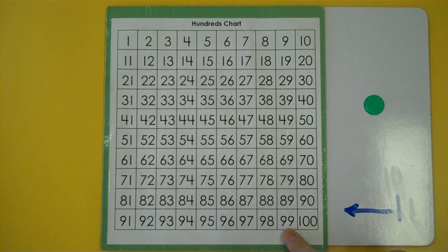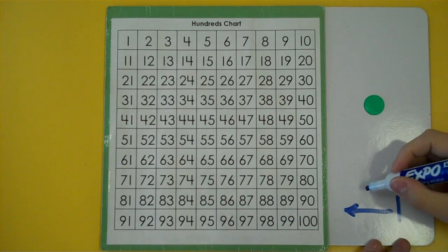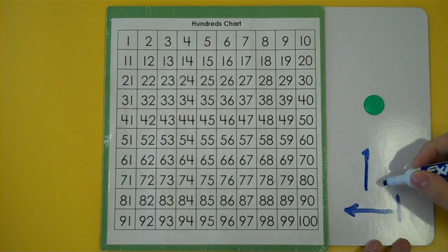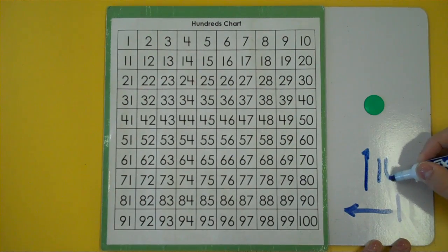100, 99, 98, one less, 97. When we move up on the hundreds chart we're getting smaller by tens.